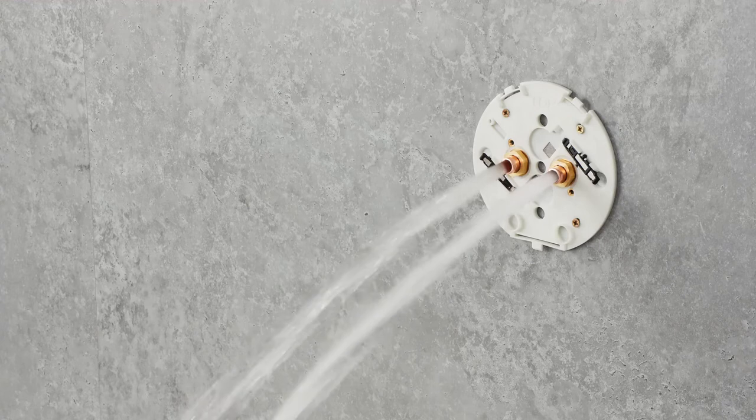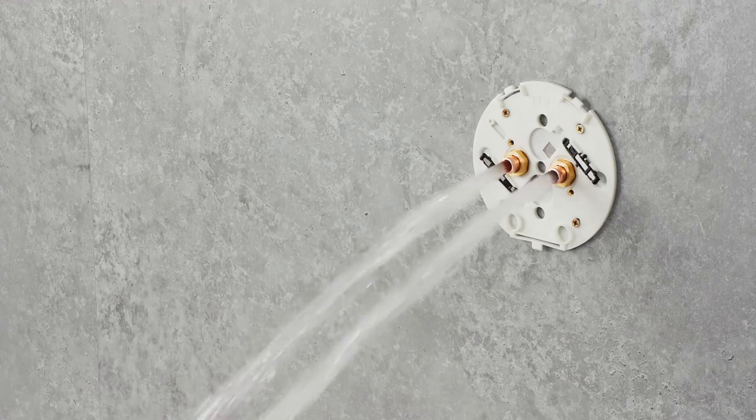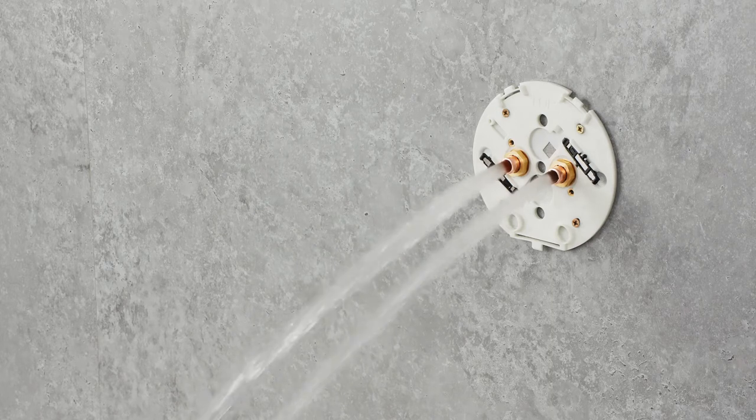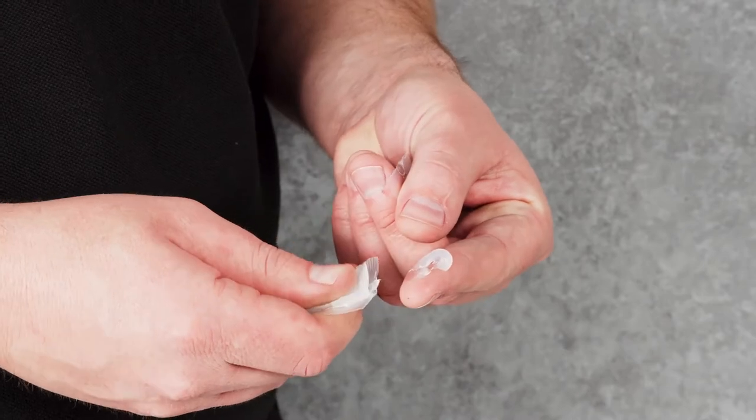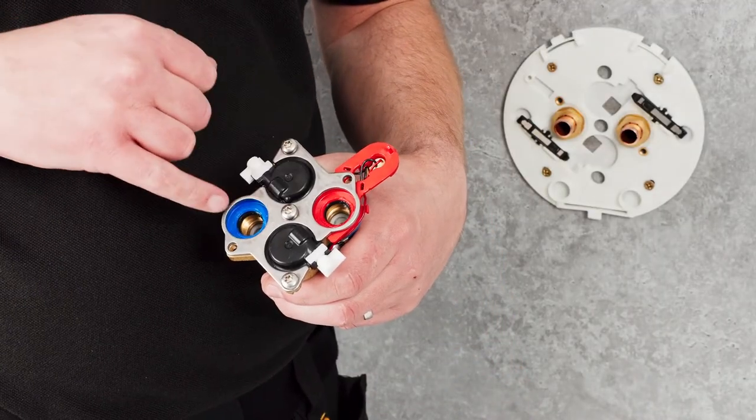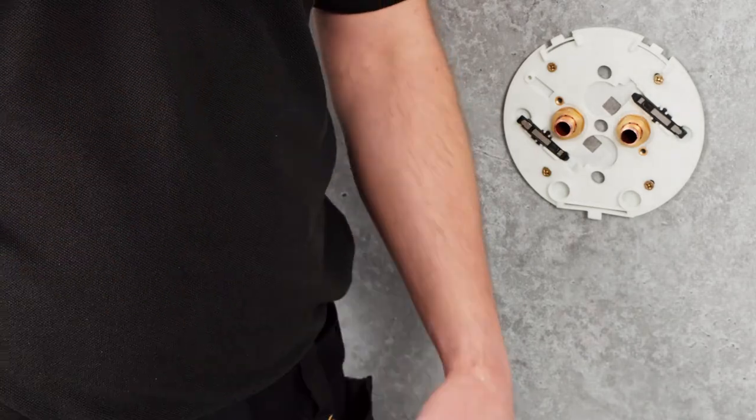Water supplies should be flushed before fitting the valve. This prevents debris from blocking the filters or corrosive fluxes causing damage to the valve mechanism or valve seals. Before locating the valve onto the supply pipework, apply a small amount of grease to the seals, checking the cleanliness of the seals from debris beforehand.